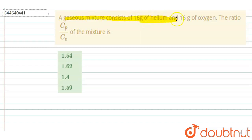of 16 grams of helium and 16 grams of oxygen. You have to find out the Cp by Cv of the mixture. So if you see here, we know that Cp is equal to Cv plus R, right?